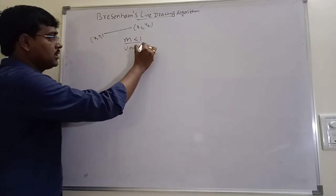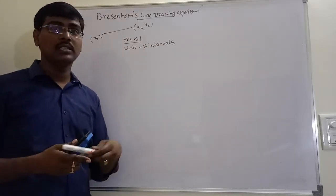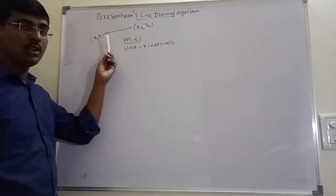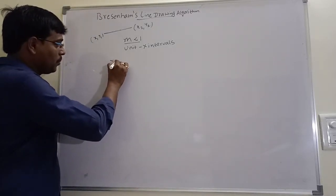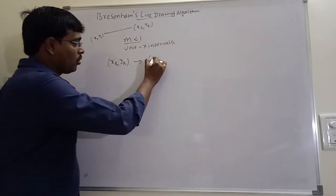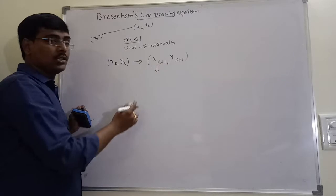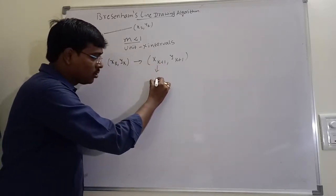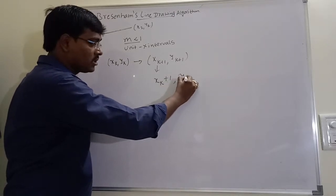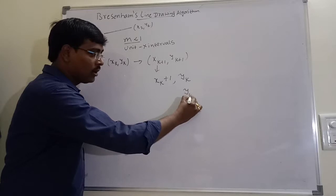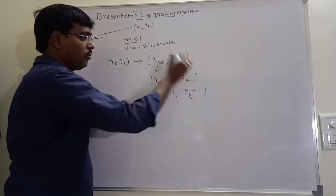Slope less than 1 means unit x intervals. Unit x intervals means each time the x coordinate value is incremented by 1, and we need to find the y coordinate. For example, if the first point is xk, yk, the next coordinate is xk+1, yk+1. And xk+1 is fixed — that is, the next x coordinate is the previous value plus 1. We have to find the y coordinate, which is either the previous y coordinate yk or the next coordinate yk+1. These are the two possible cases.